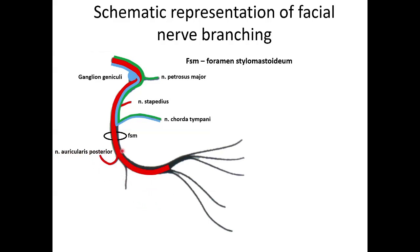With our ears as animals, for example. Then Ramus Digastricus — here it is, Ramus Digastricus — for Musculus Digastricus and Musculus Tilohyoideus.